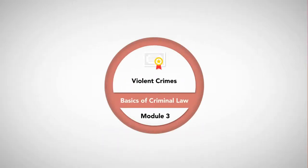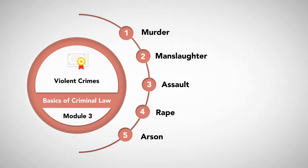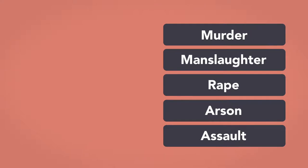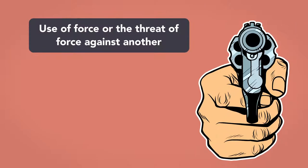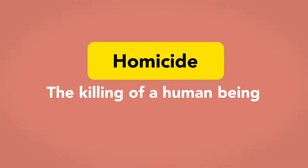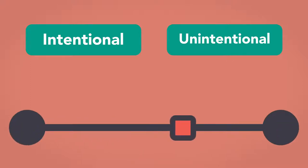Module 3 – Violent Crimes. Violent crimes include murder, manslaughter, rape, arson, and assault. Violent crimes are typically earmarked by the use of force or by the threat of force against another. The most serious category of violent crimes is homicide, which means the killing of a human being. Homicides may be intentional or unintentional, and the law establishes varying degrees of culpability, depending on the defendant's intent and various other factors.